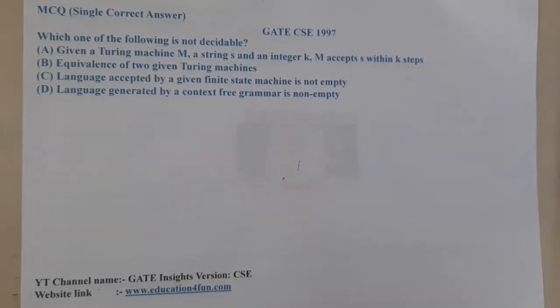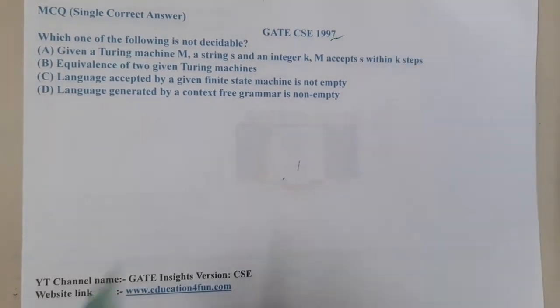Hello guys, we are back with the next lecture. In this lecture, let's go through the next question. This question belongs to GATE CSE 1997. The given question is: which one of the following is not decidable?